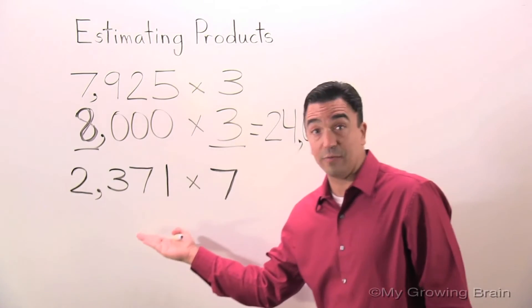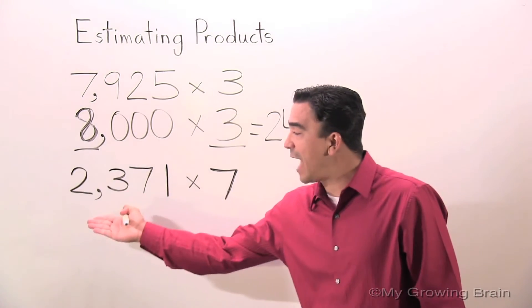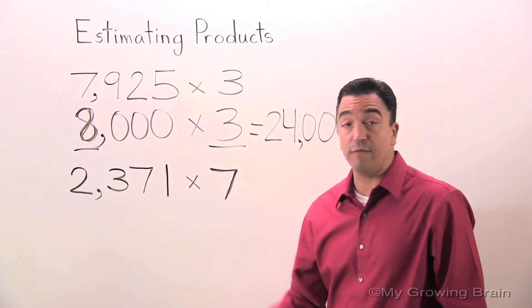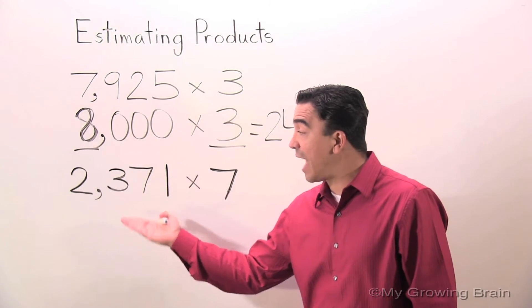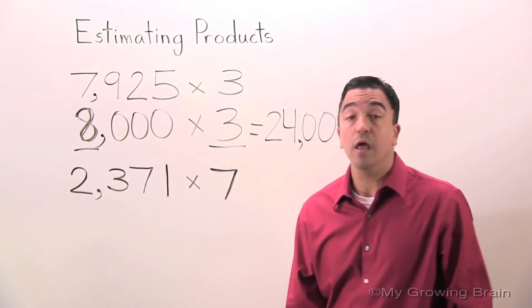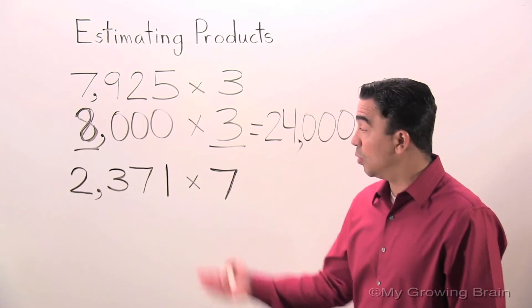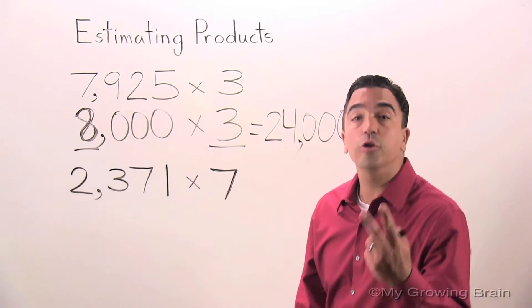Let's go to the next problem. 2,371 times seven. I'm going to round 2,371 to the nearest thousand, which would be 2,000.